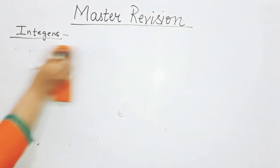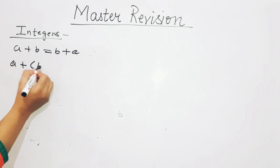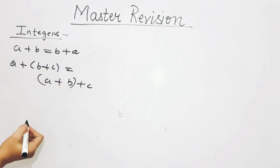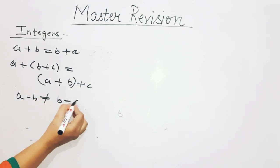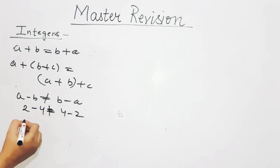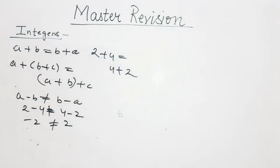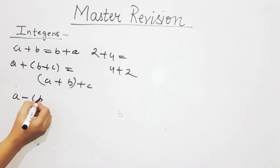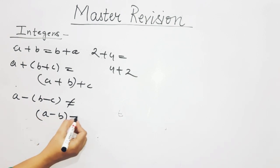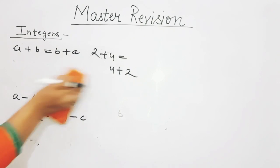Now some properties: addition of integers is commutative — a plus b equals b plus a. Addition is also associative — changing the bracket order does not affect the answer. However, these two properties — commutative and associative — do not follow in subtraction. That means a minus b is not equal to b minus a, and changing brackets in subtraction gives different answers.